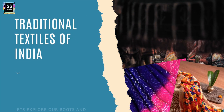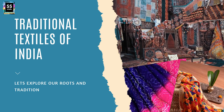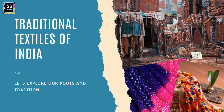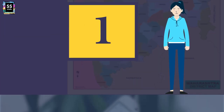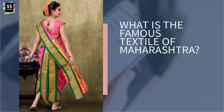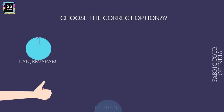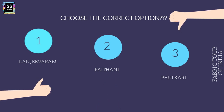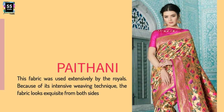Traditional Textiles of India — let's explore our roots and traditions. I am here with Part A, where I am going to represent 15 states all over India and their famous textiles. Number 1: Which is the famous textile of Maharashtra? As the pictures suggest, do you have any guesses? The options are: Is it Kanjivaram? Is it Paithani? Or is it Phulkari? It is Paithani from Maharashtra, belonging to the town of Aurangabad, and famous for its hand-woven silk sarees called Paithani.